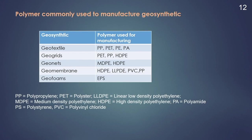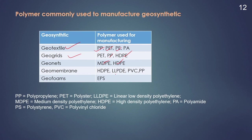The different geosynthetics are made from different polymers. Geotextile can be made from polypropylene, polyester, polyethylene, and polyamide. Geogrid can be made of polyester, polypropylene, and high-density polyethylene. Geonet can be made of medium-density and high-density polyethylene. Geomembrane can be made of high-density polyethylene, linear low-density polyethylene, polyvinyl chloride, and polypropylene. Geofoam is made of EPS (expanded polystyrene).